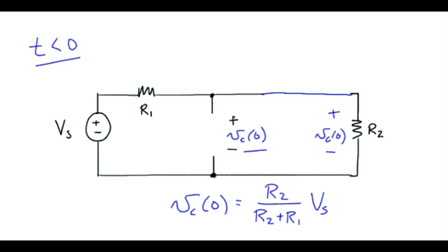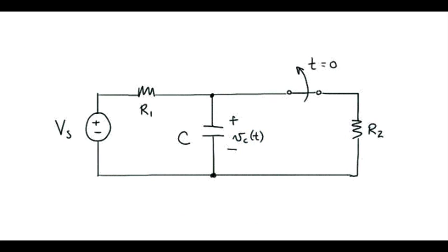So let me pull up the original circuit. Let's start by looking at the circuit for time greater than 0. That means this now looks like an open, so we've disconnected the resistor R2 so we can remove that device.